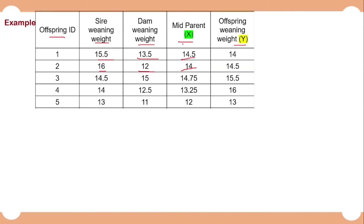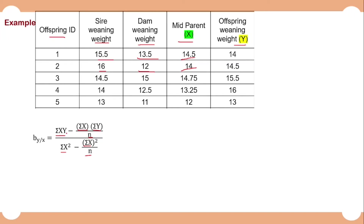Now that we have the midparent values, we will find the regression coefficient of offspring on midparent. Using the formula, we need: sum of xy, sum of x, sum of y, n, sum of x², and sum of x. We will first calculate all these values and then substitute them into the formula to calculate the regression coefficient.